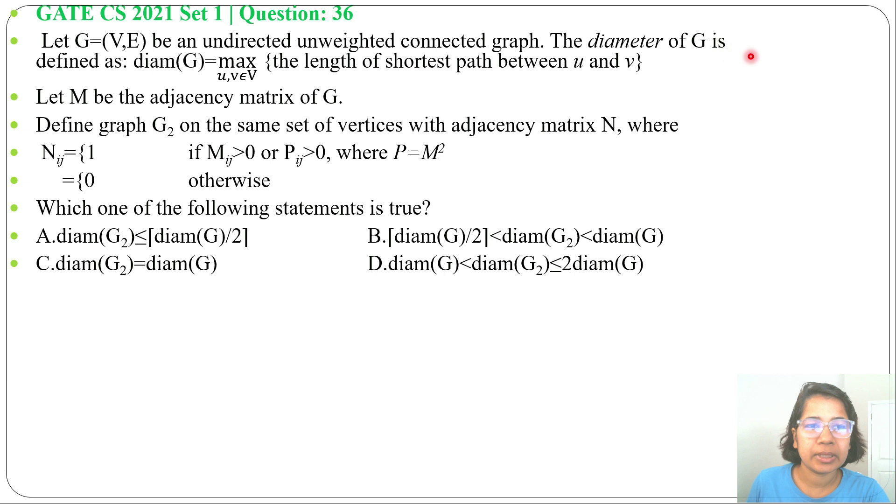The diameter of G is defined as diam(G) equals max of u,v belongs to V, the length of the shortest path between u and v. Let M be the adjacency matrix of G. Define graph G2 on the same set of vertices with adjacency matrix N, where N_ij equals 1 if M_ij greater than 0 or P_ij greater than 0, where P equals M squared, otherwise 0.